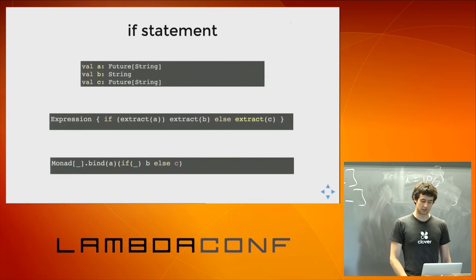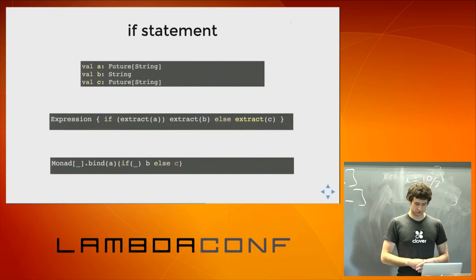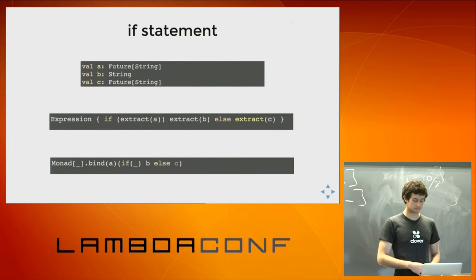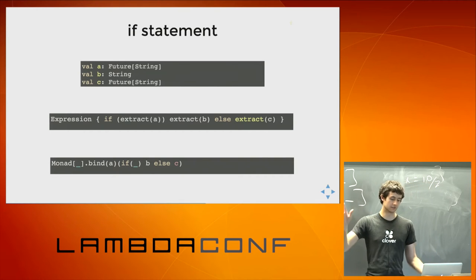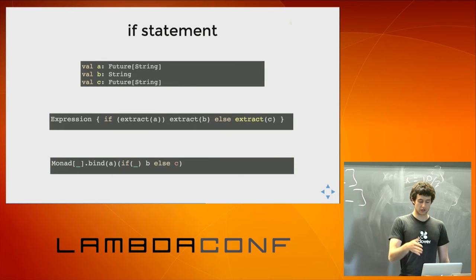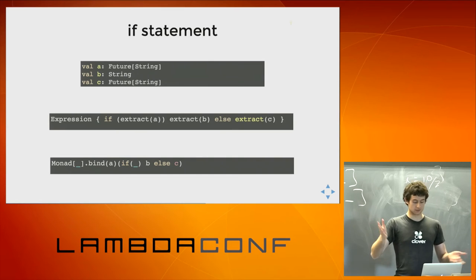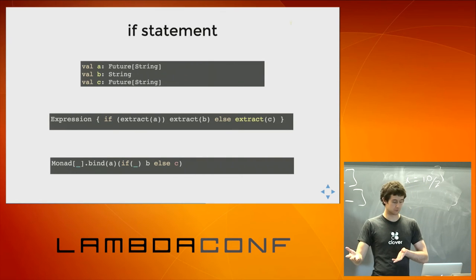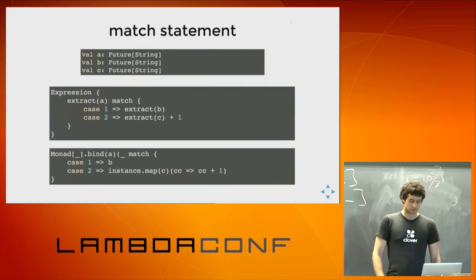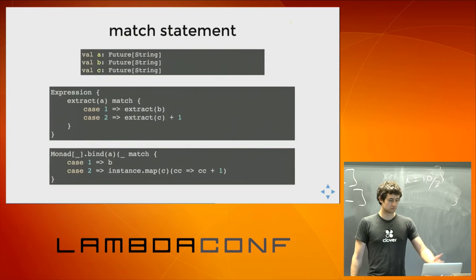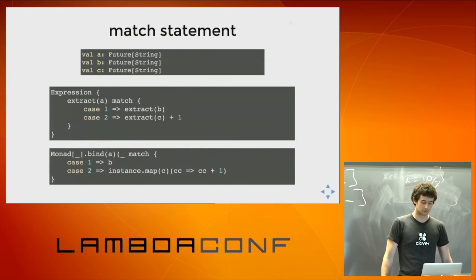Here's an example with an if statement, just to show how simple the transformation is. We have: if (extract a) extract b else extract c. It just translates to bind over A, and then if A equals something produce B, else C. There's also the case of a match statement, which is very similar to the if statement — the translation is pretty straightforward.